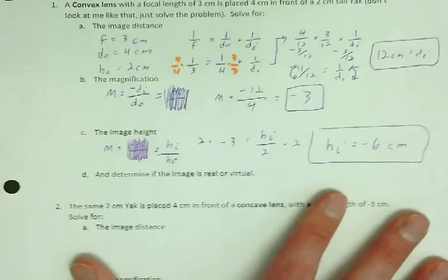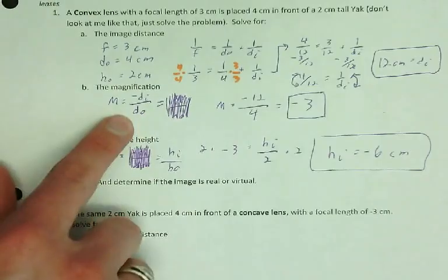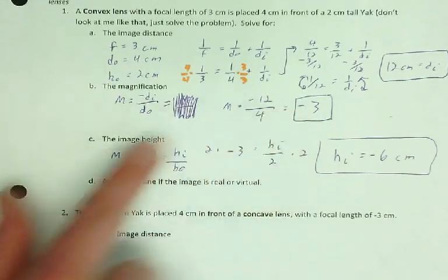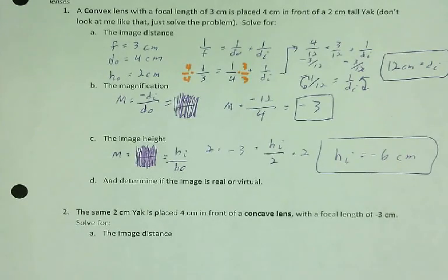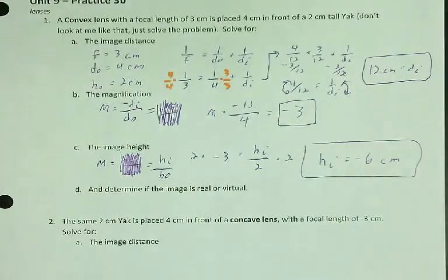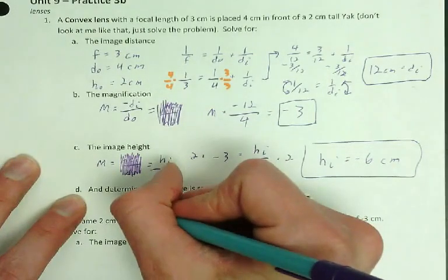So we use the focal length equation to figure out DI. We use DI and DO to figure out magnification. We use magnification to figure out height of the image. And all that's left is to figure out if it's real or virtual. Two ways to figure out, looking at DI or looking at the magnification. So negative magnifications are always real, positive magnifications are virtual. Positive DI's are always real and negative DI's are always virtual. So this is a positive DI and a negative magnification. That means this is real.